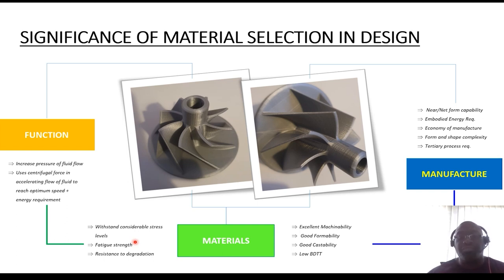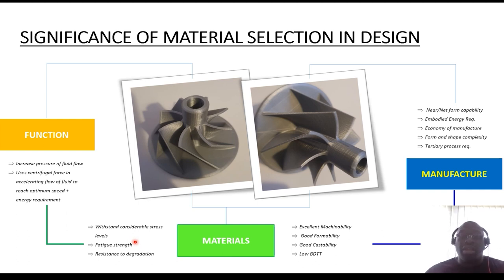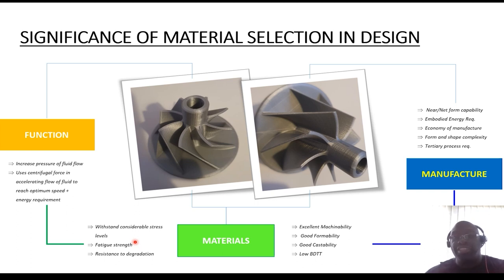Good castability is also important, as is low BDGT — that is a failure mode where a ductile material transitions into brittle failure due to a transition in its operational temperature. There is a temperature point at which, if the material reaches that point, it will transition, particularly if the material used is quite ductile. These are some of the things that materials will influence in terms of the process required to select for a given component.